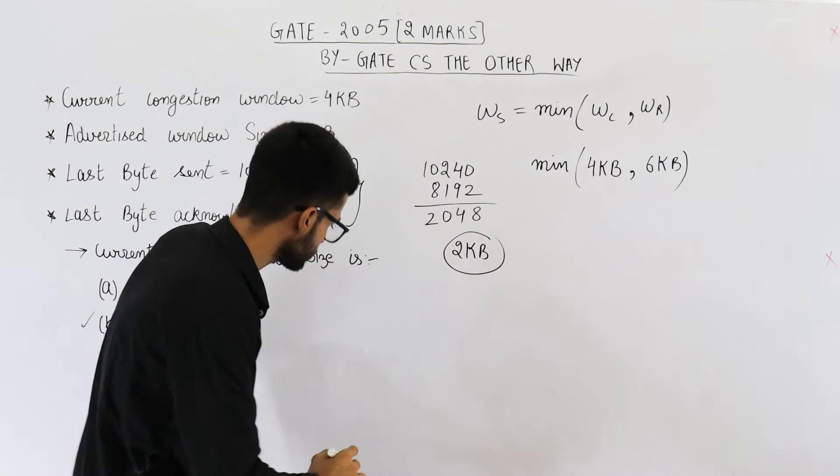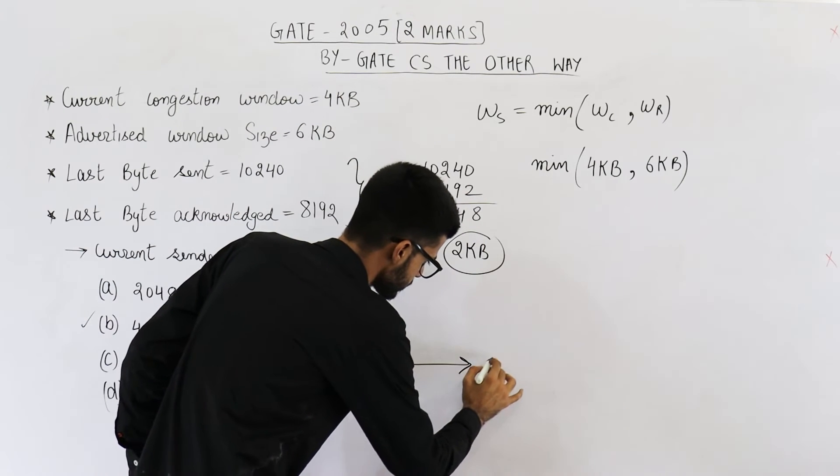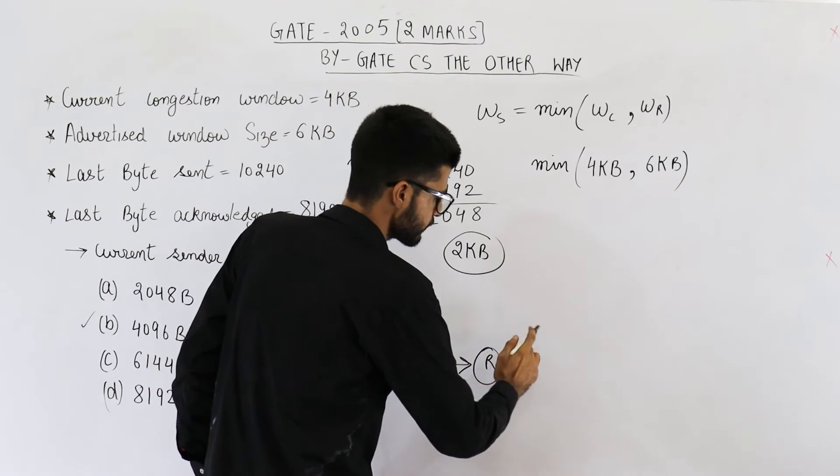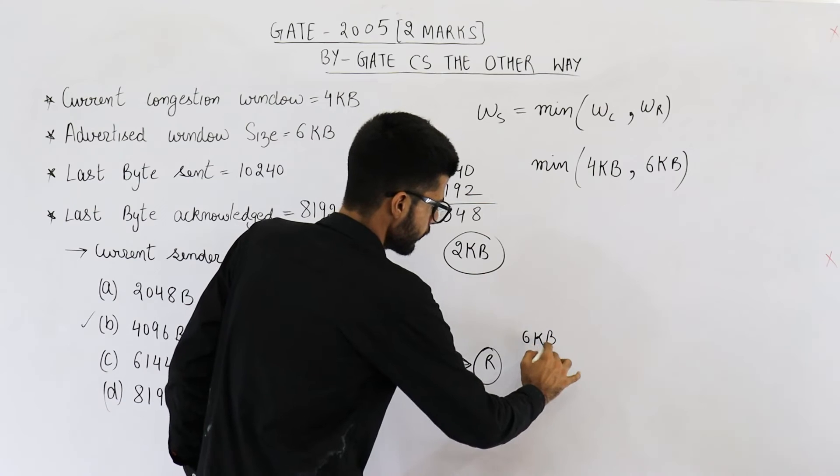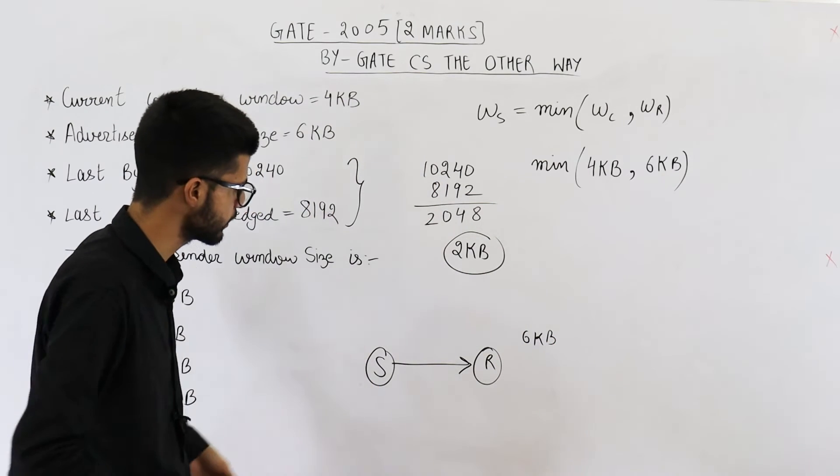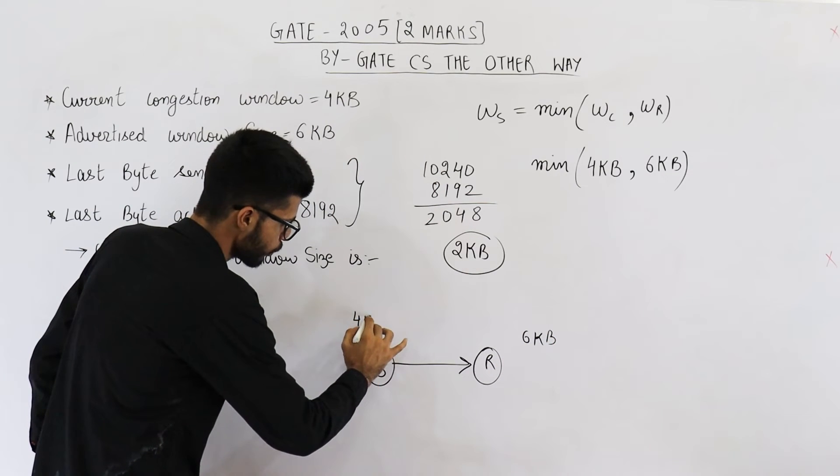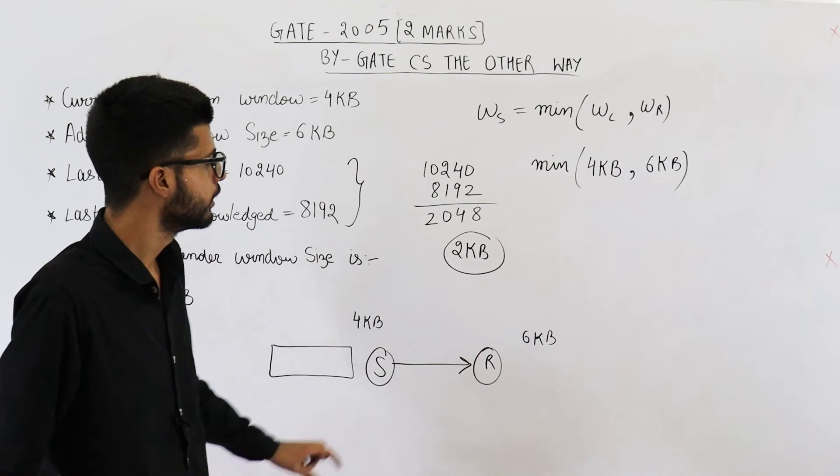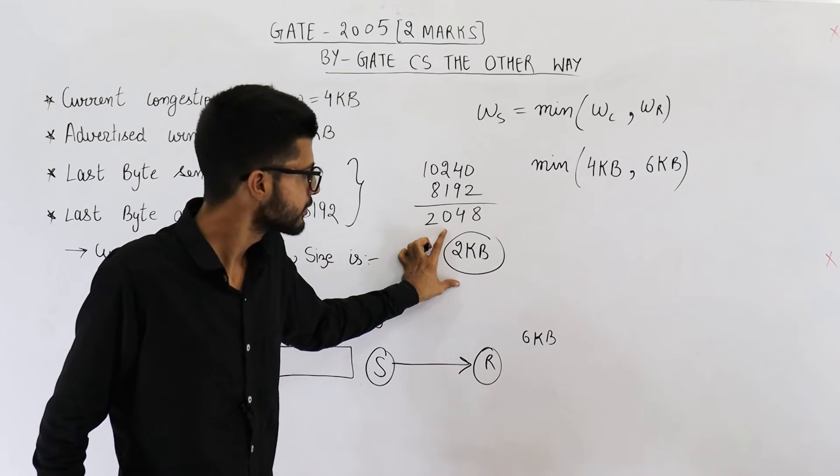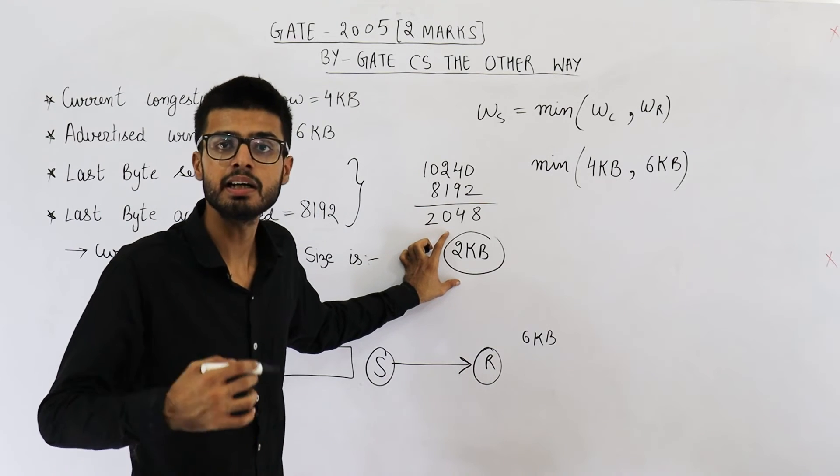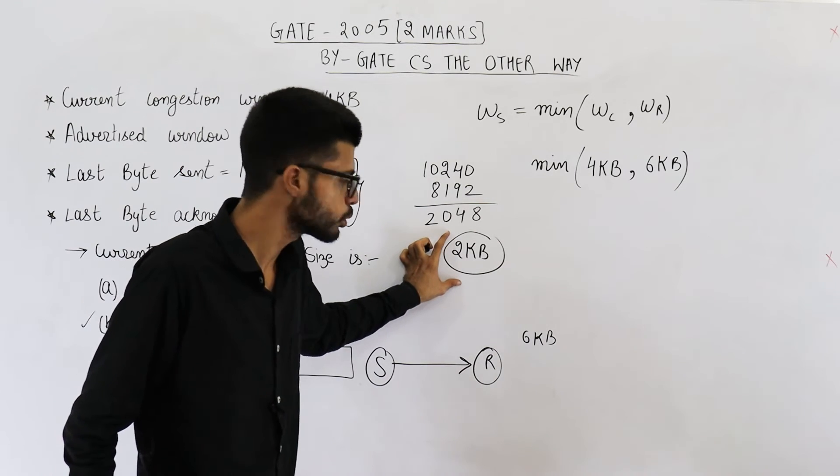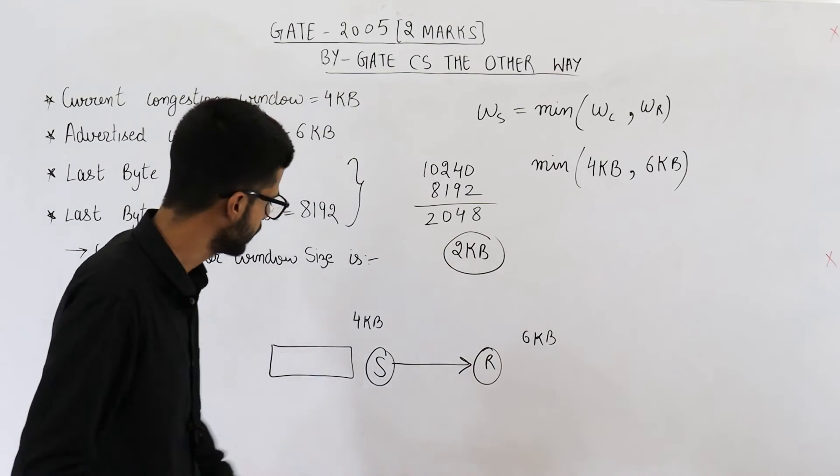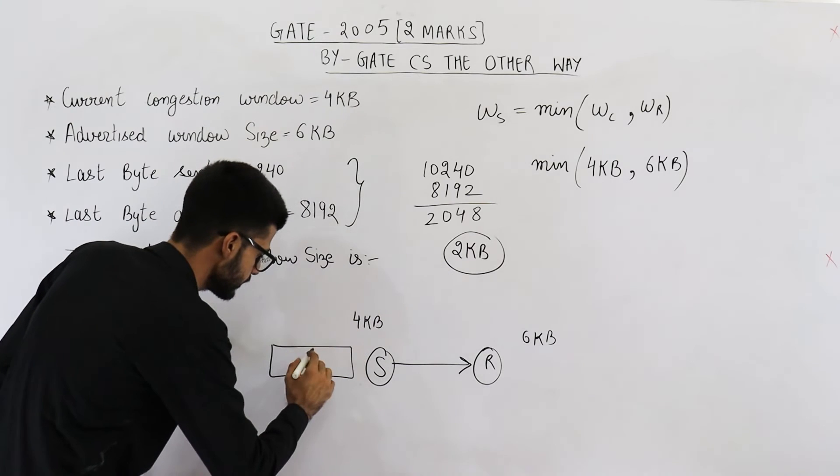See, this is the sender, this is the receiver. Buffer memory or receiver window is of 6 KB. We have already found out that sender window is of 4 KB. Suppose this is the sender window, it is of 4 KB. Currently, sender has these many unacknowledged bytes. That means 2 KB of data is sent but we haven't got any acknowledgements for this data. So this data will be present in the window.